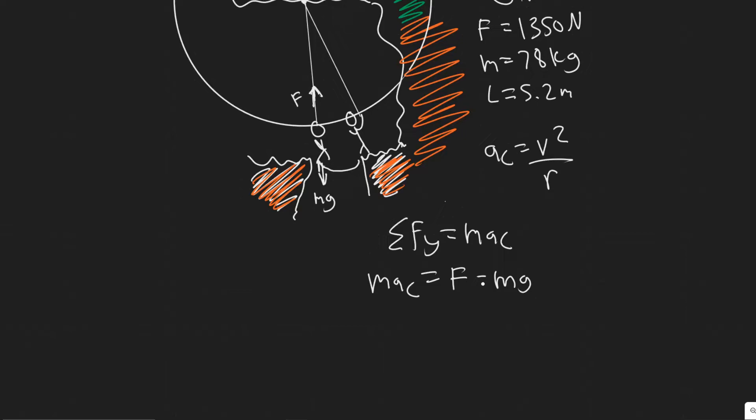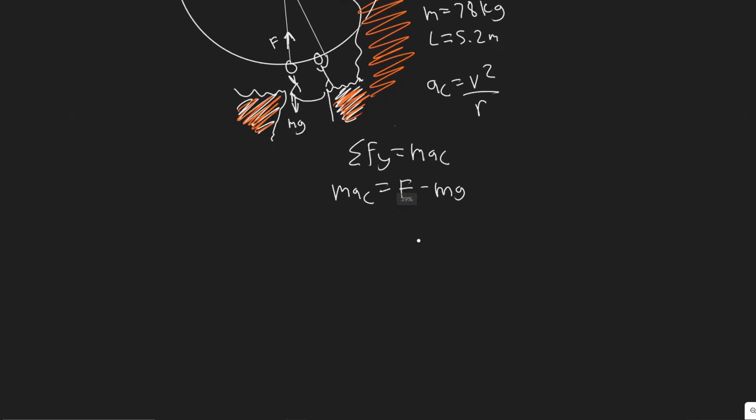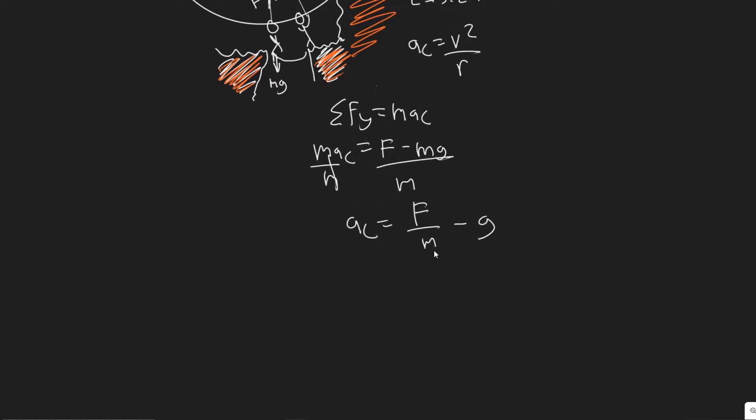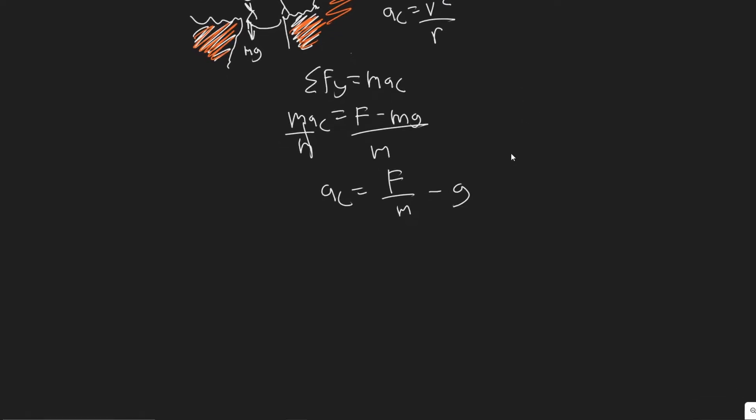So we want the centripetal acceleration, a_c. So if we divide by m, you get it equals F over m minus g, and then this is just going to cancel right here, because you're dividing m by m. And so we can find this centripetal acceleration when his force that he exerts is maximum, because when this value is greater, it's going to result in a greater centripetal acceleration, which is a greater velocity. So what we want to do is just plug in the values now for it.